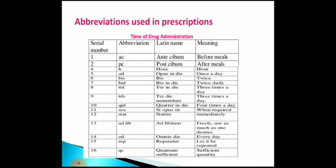Certain abbreviations are used in the prescription by a physician or registered medical practitioner to dispense and compound the prescription. On the time of drug administration, these are mentioned in the prescription. AC — ante cibum — means before the meal. PC — post cibum — means after the meal. Hora means hour; OD means once a day; BD means twice a day; TID means three times a day. Statim means immediately. SOS means whenever needed or required. QS — quantum sufficit — means the sufficient quantity used for dilution or manufacture.